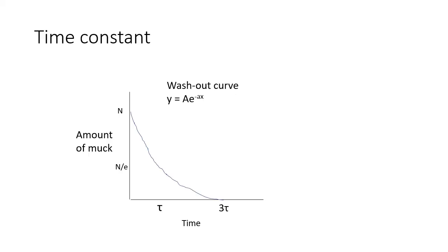Let's examine that same idea using a washout curve. If we were to continue the initial rate of change, which is to follow the tangent at time zero, then we will complete the process in one time constant, which is 10 minutes. Time constant can also be defined as the amount of time taken for the amount of muck to fall from n to n divided by e.